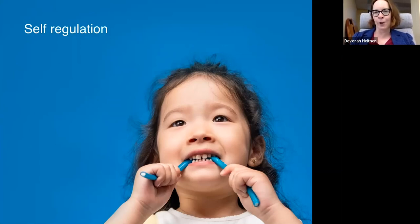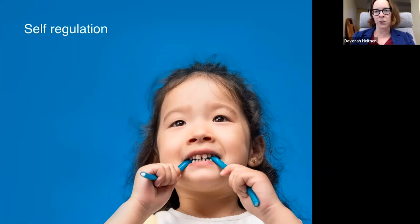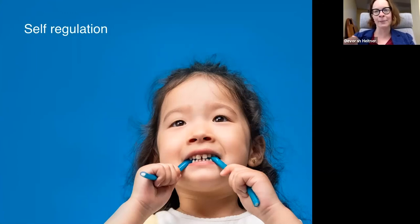Self-regulation means especially resisting the siren call of the Legos, resisting the urge to go get a snack, showing up to the next thing. We can support our kids in self-regulation, but we also have to have age-appropriate expectations. Most kindergartners given a device that has a lot of fun things to do will need some help focusing if they have too many choices. If we can get a printout or printed workbook, that may be helpful if your child is struggling to self-regulate — especially for kids who are going off the rails with things like YouTube or gaming.